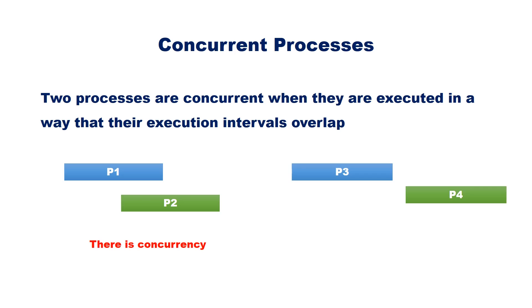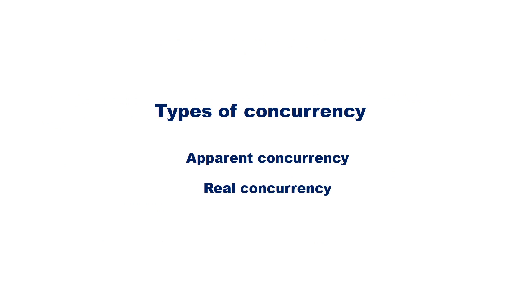Take another two processes P3 and P4. P4 starts only after the completion of P3, hence there is no concurrency. Concurrency can be of two types: apparent concurrency and real concurrency.